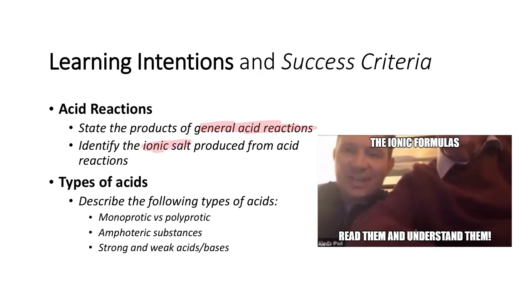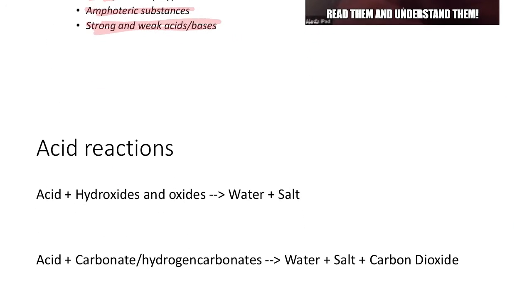We're going to go through again the products of general acid reactions, ionic salts that are produced from acid reactions, and the types of acids being the monoprotic versus the polyprotic, amphoteric, and strong and weak acids and bases, all stuff that we've covered in Year 11.